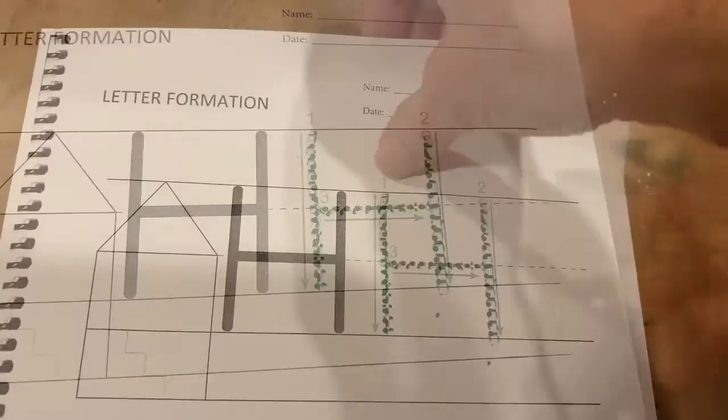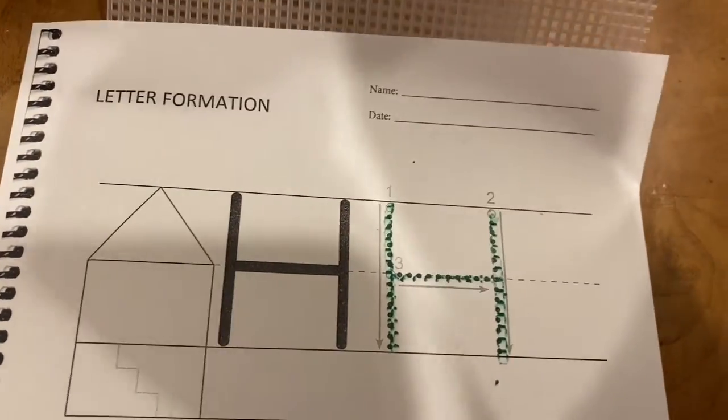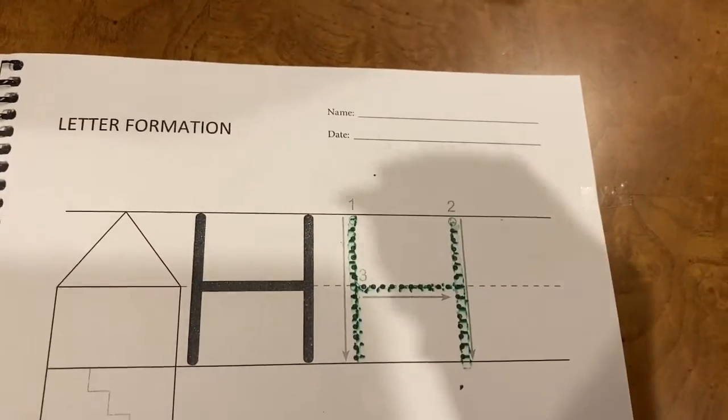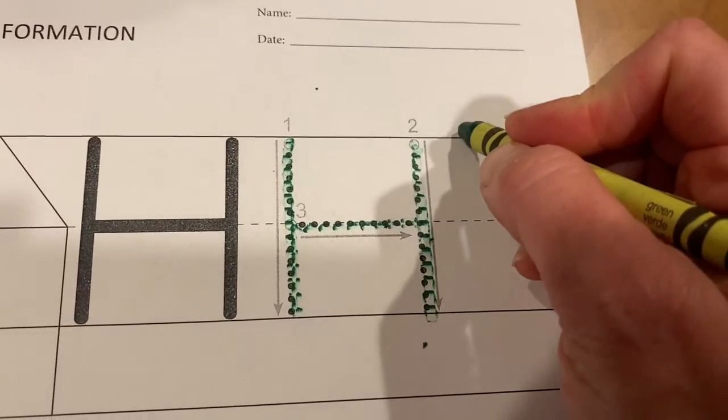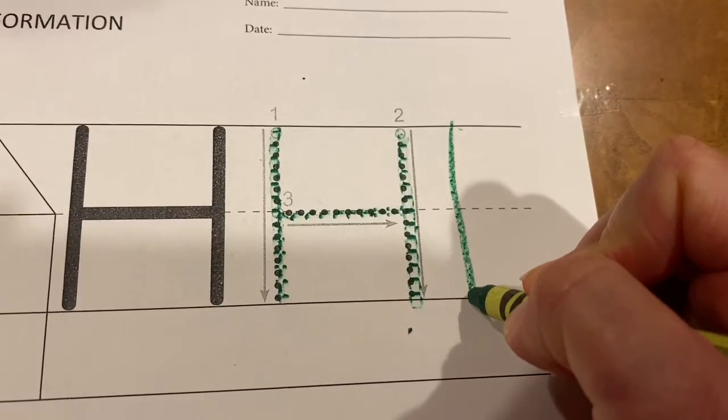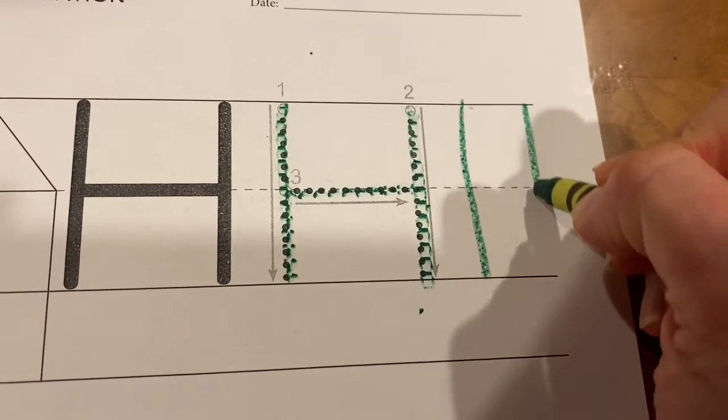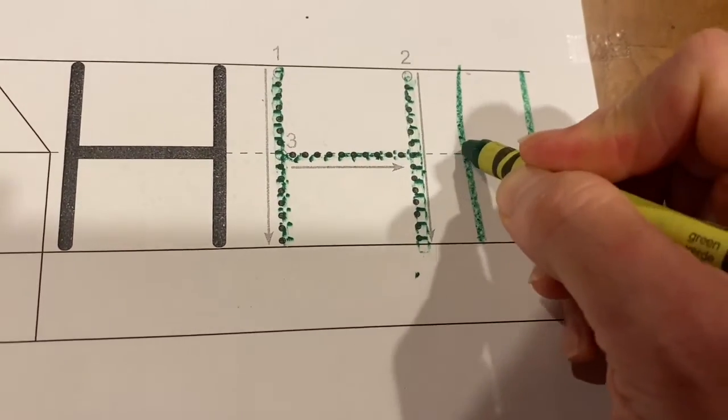Now let's practice. Take your bumpy screen out and set it aside. Take your green crayon and you're going to do a line down to the bottom, line down to the bottom, and a line across.